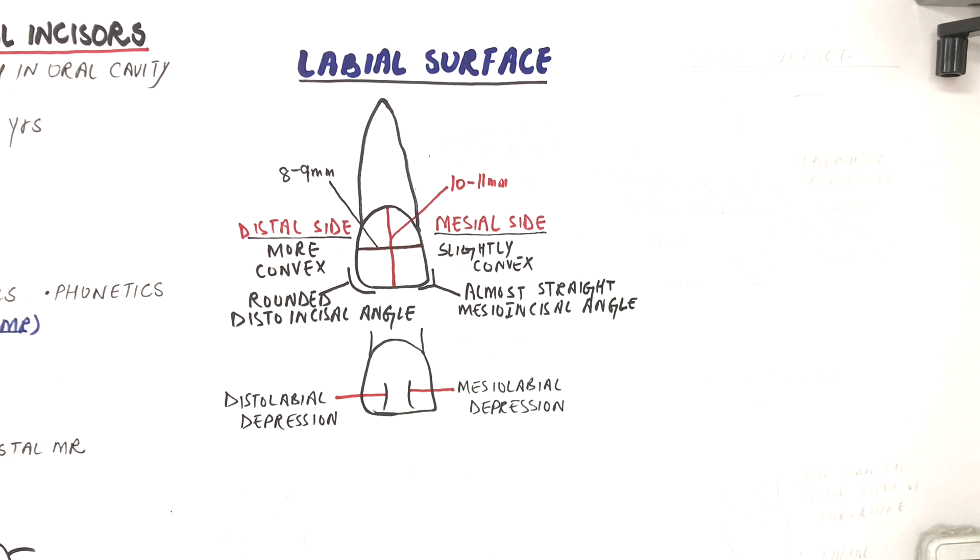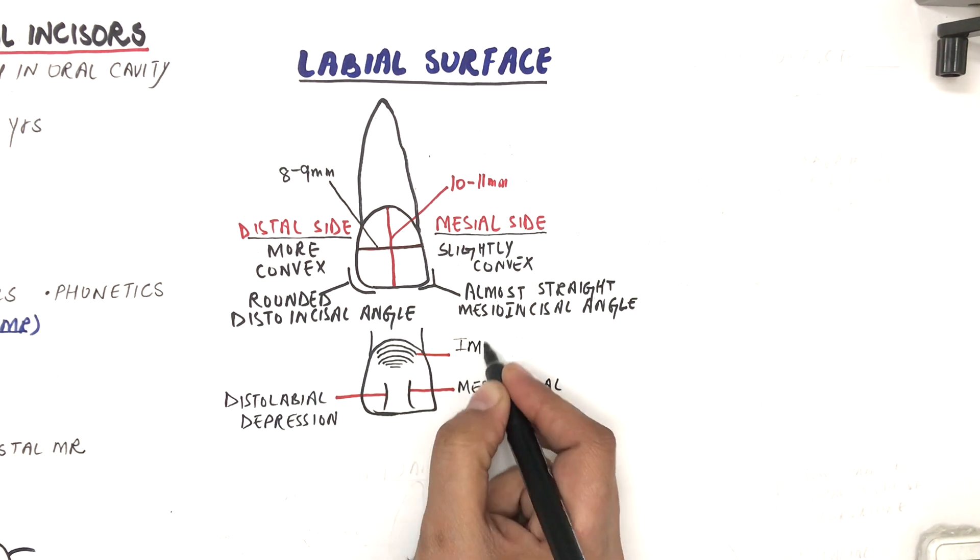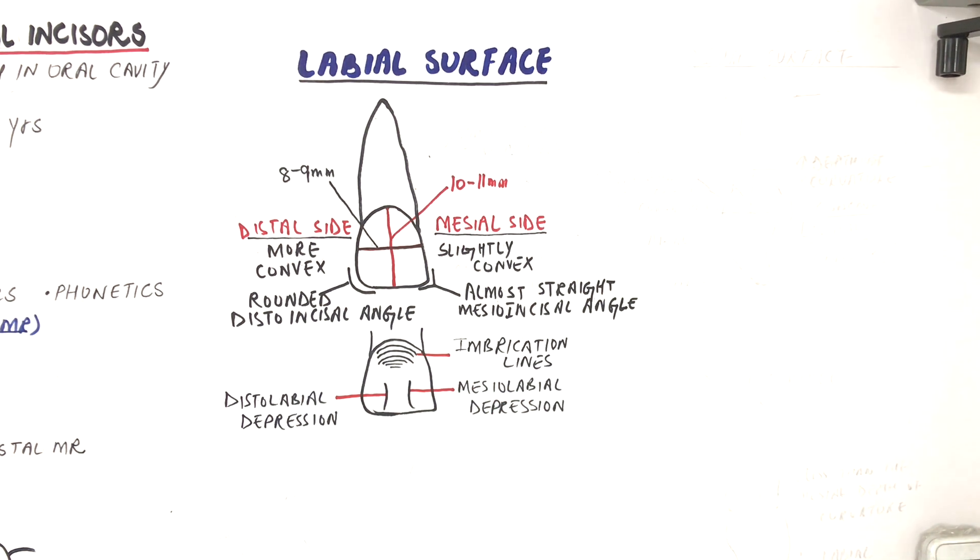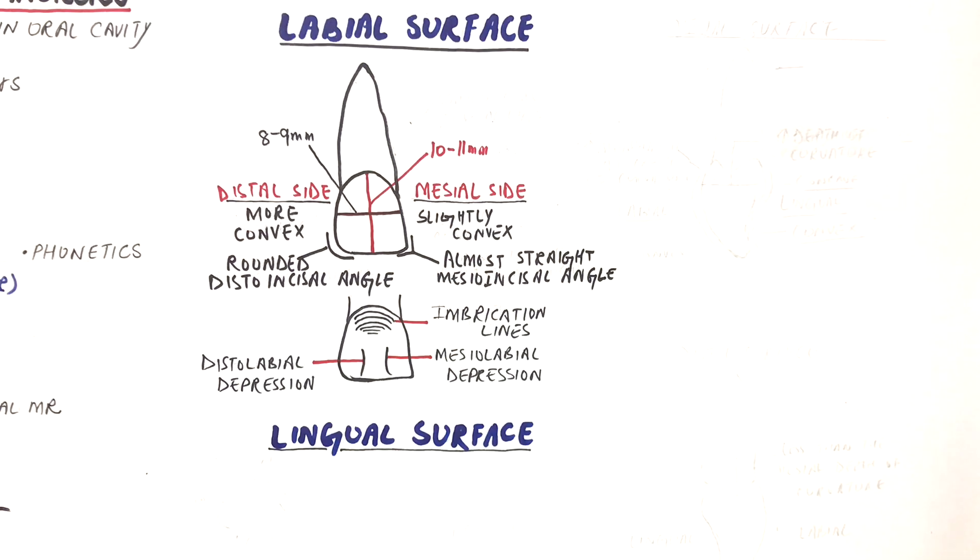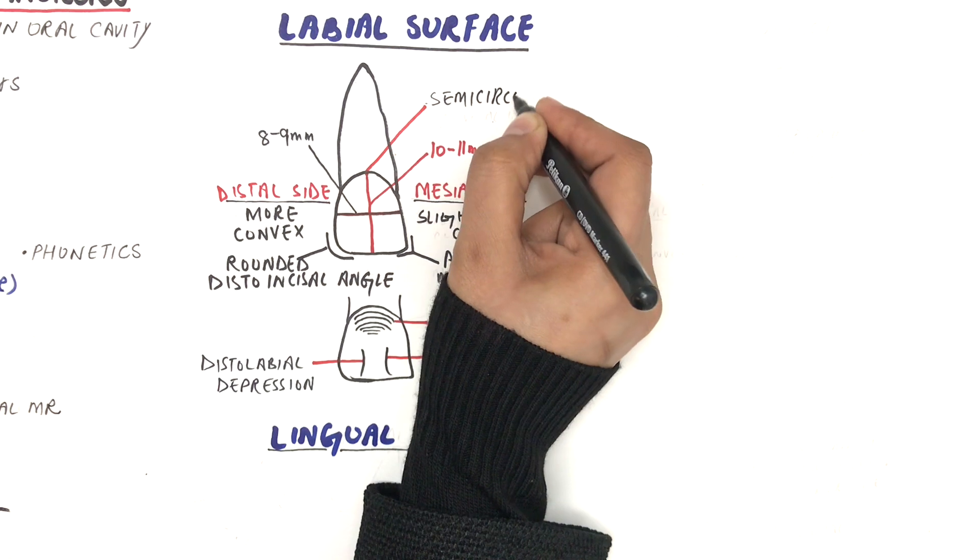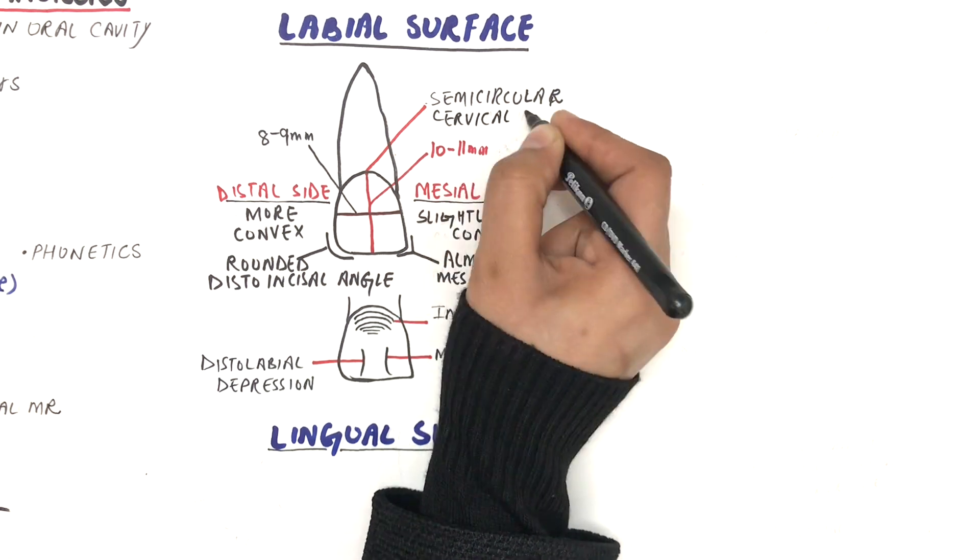Sometimes the tooth at its cervical third might have some faint and curved lines which are roughly parallel to the cementoenamel junction and are called imbrication lines. The cervical outline is semicircular in shape. The root is conical with a blunt apex.